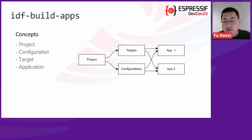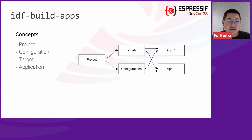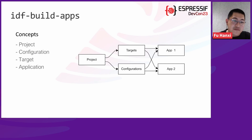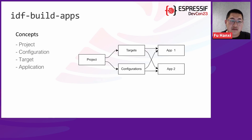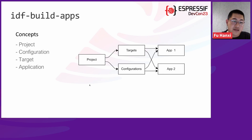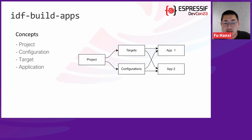Let's go through IDF BuildApps and talk about a few concepts. A project is a directory that contains all the required C files and CMakeLists files, as well as additional supporting elements like a partition table or data files. A configuration, as mentioned earlier, is a single file — usually the sdkconfig file. A target refers to our target chips, the hardware we build for. An application is the executable built according to the project. As you may see, different targets and different configurations generate a build matrix for our test purposes.